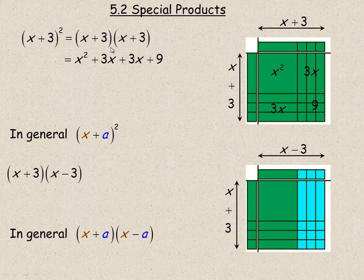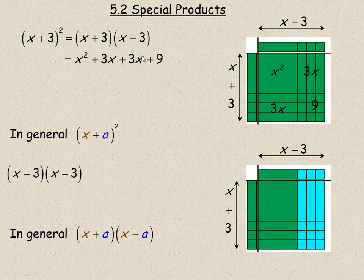Notice that if the two dimensions are the same — if this factor is the same as this factor — then the two middle terms will always be exactly the same. Because one comes from multiplying this 3 by this x, and the other one is multiplying this 3 by this x. So they're both the same. The whole point of these special products is so you don't have to go through all these steps to get what x plus 3 squared would equal — we're developing shortcuts here.